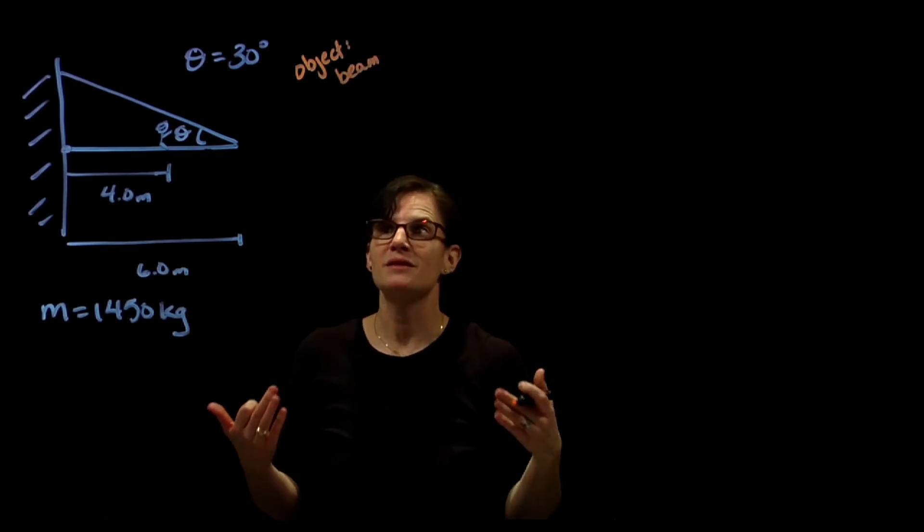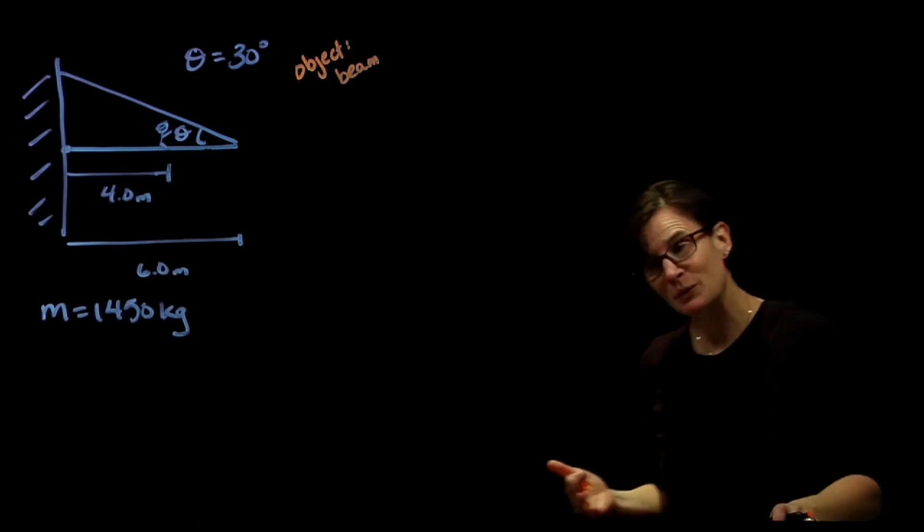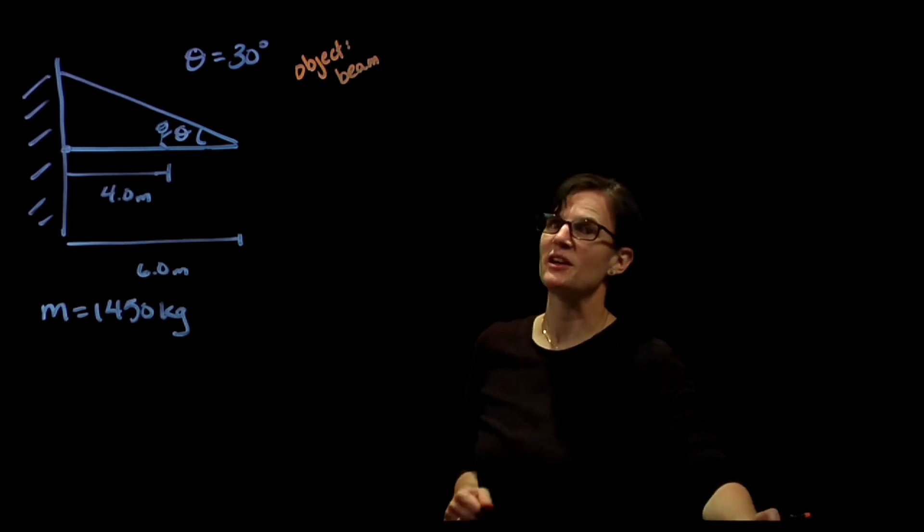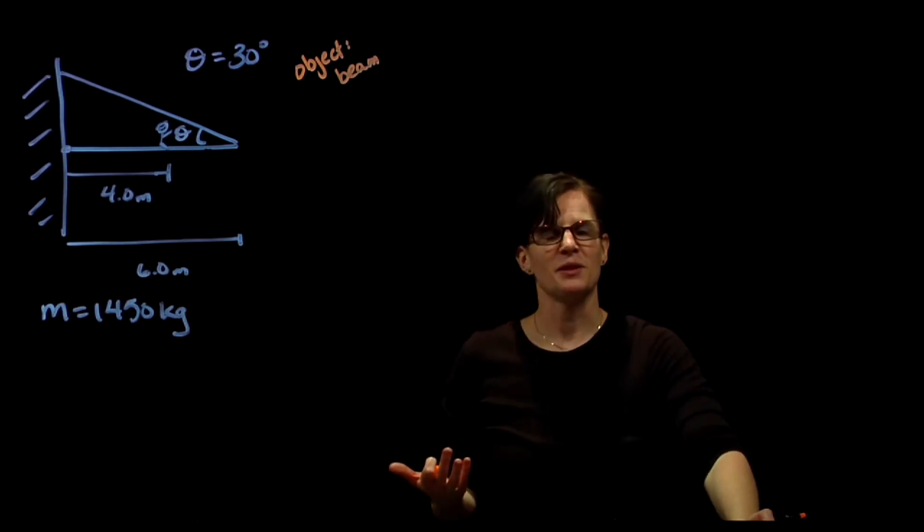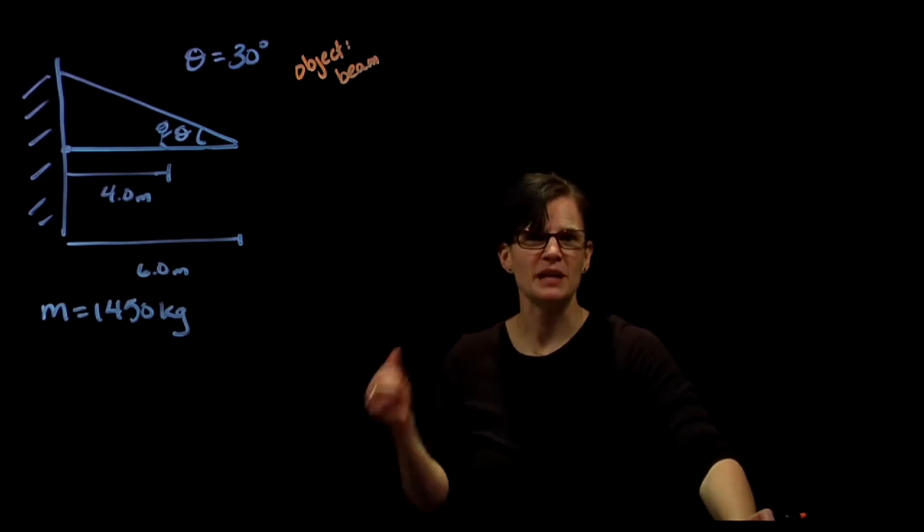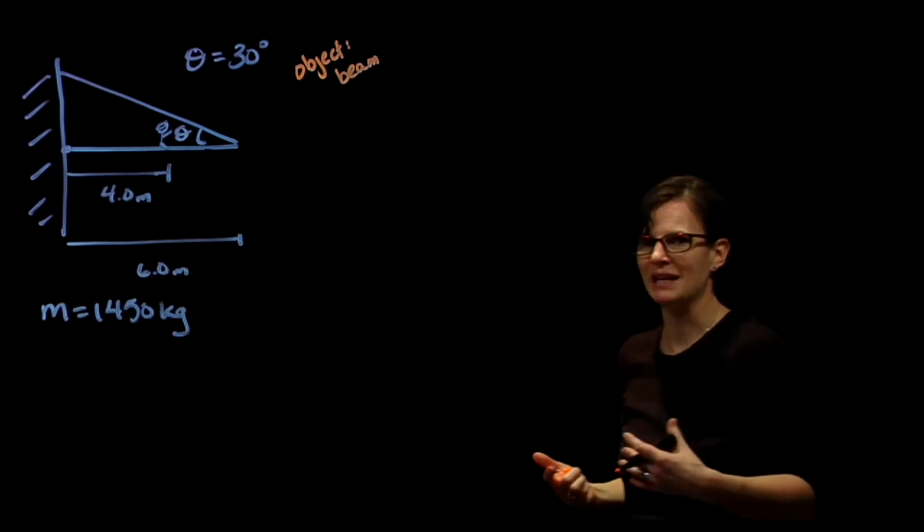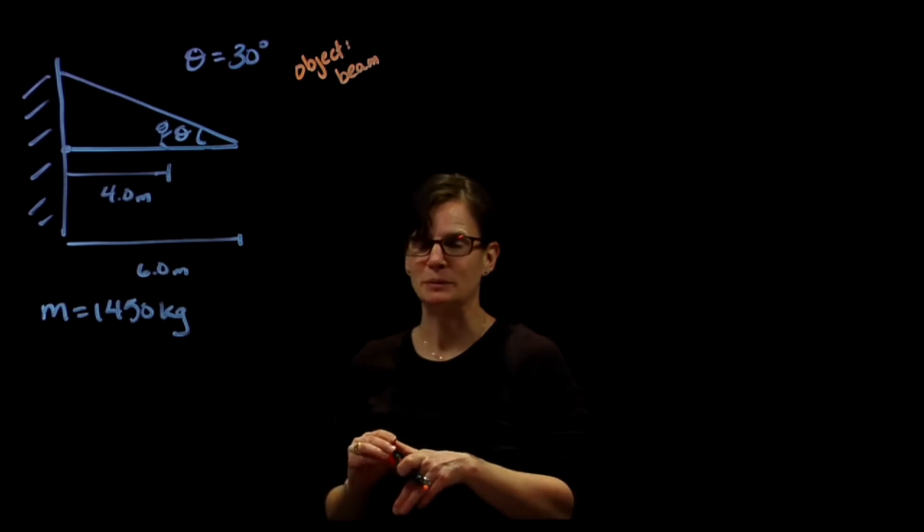We want to determine the tension that that cable is exerting on the beam. So what kind of situation do we have? We're in a situation of static equilibrium. The beam is not rotating, it's not moving laterally, so it's not translating and it's not rotating. This is a state of static equilibrium.